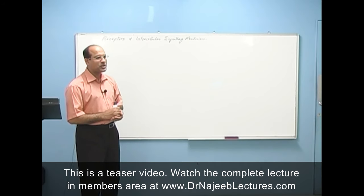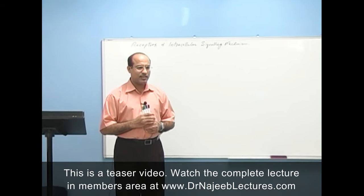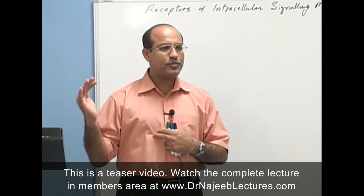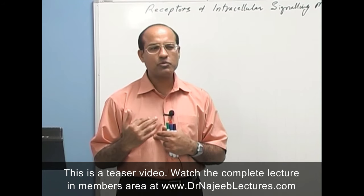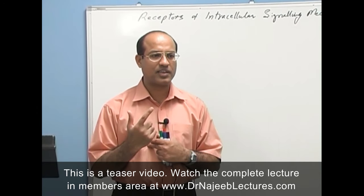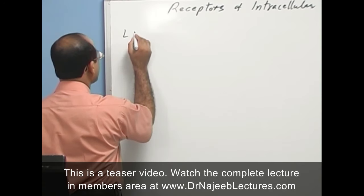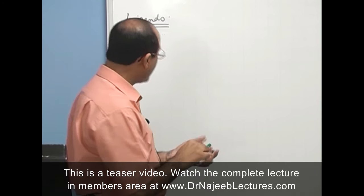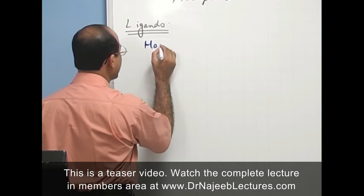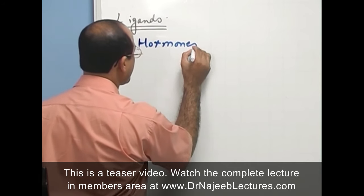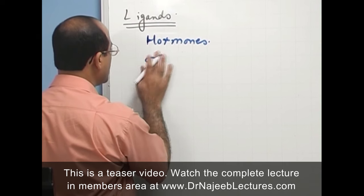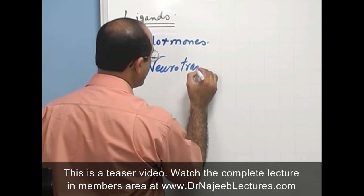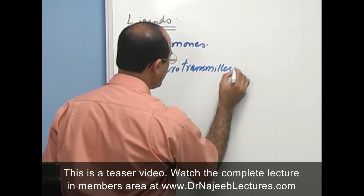Today we are going to talk about receptors. Receptors are very special macromolecules which are present within our body and different ligands work on them. We have to first discuss what is a ligand and what is a receptor. Ligands are the substances which bind with specific receptors. For example, all the hormones in your body are acting as ligands, and all your neurotransmitters are also ligands.